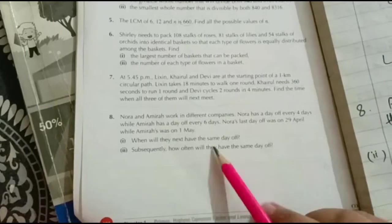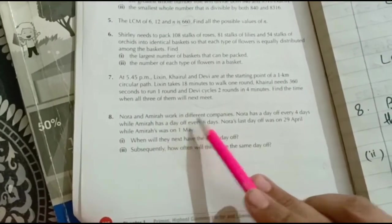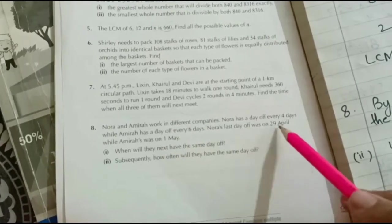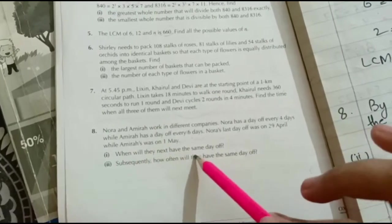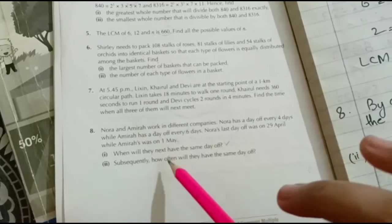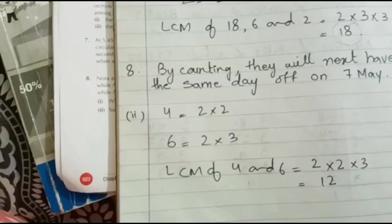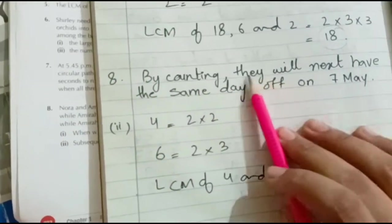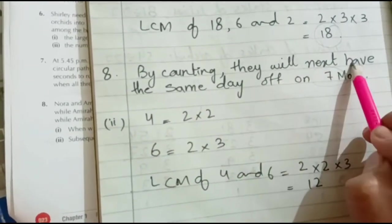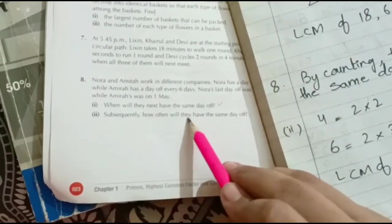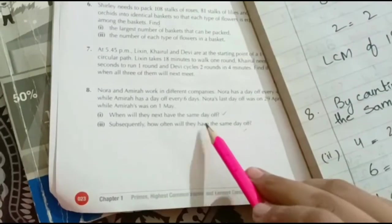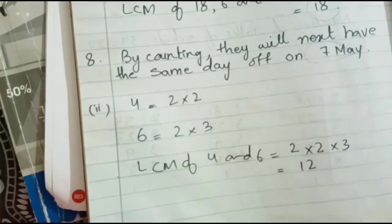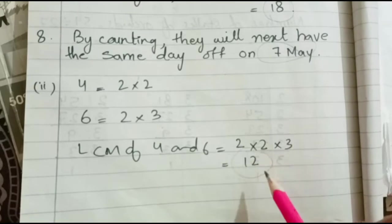Question number 8: Nora and Amara work in different companies. Nora has a day off every 4 days, while Amara has a day off every 6 days. Nora's last day off was 29th April, while Amara's was 1st May. By counting forward, they will next have the same day off on 7th May. To find how often they share the same day off, we find the LCM of 4 and 6, which is 12. So they will have the same day off every 12 days.